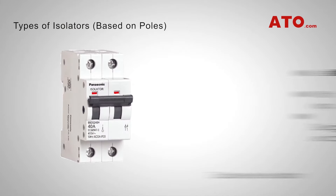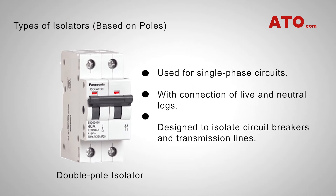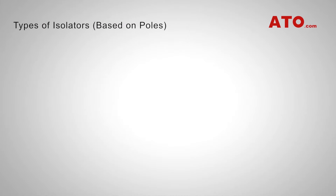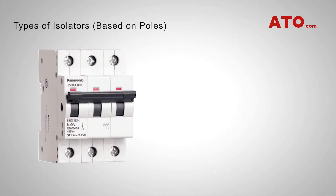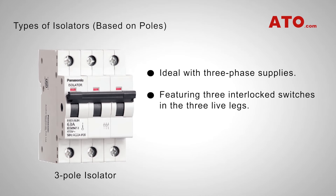Double pole isolator switches are also used for single phase circuits and are designed to isolate circuit breakers and transmission lines for the purpose of maintenance. Three pole isolator switches are ideal with three phase supplies and feature three interlocked switches in the three live legs.